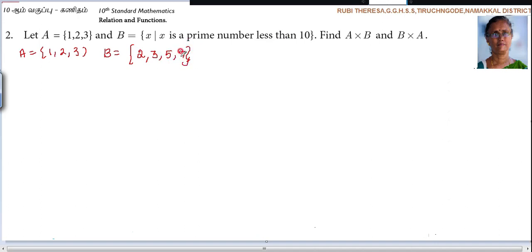9 has more than two factors because it is divisible by 1, 9, and 3 also. So you should not write 9. Less than 10, so only up to 7. 2, 3, 5, 7. What are they asking? A cross B. They are asking A cross B. So first you have to write the A set.